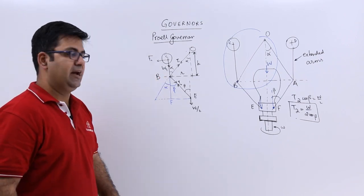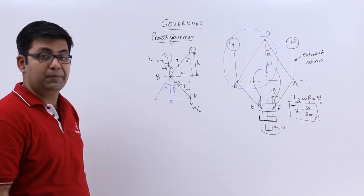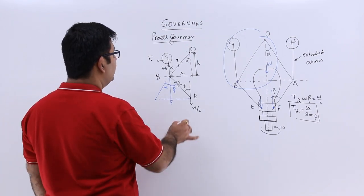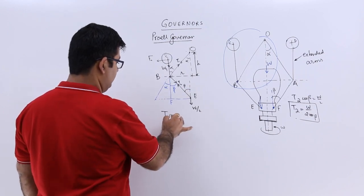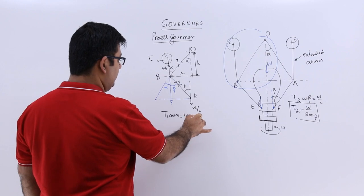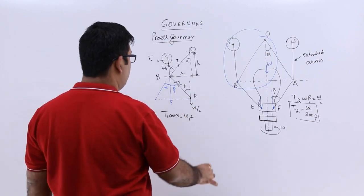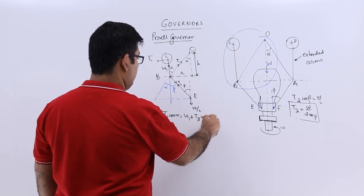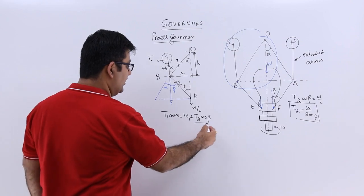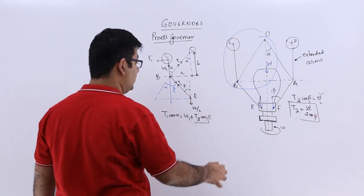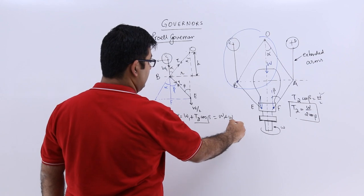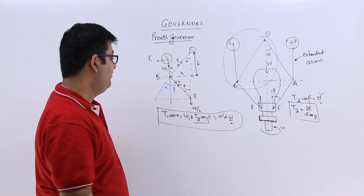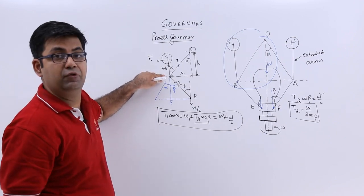Now let's look at the equilibrium at point B in the vertical direction. That would be T1 cos alpha equal to T2 cos beta, which equals W by 2. So this will become W1 plus W by 2. So this is the value of T1 cos alpha when we take the equilibrium at point B for the vertical forces.